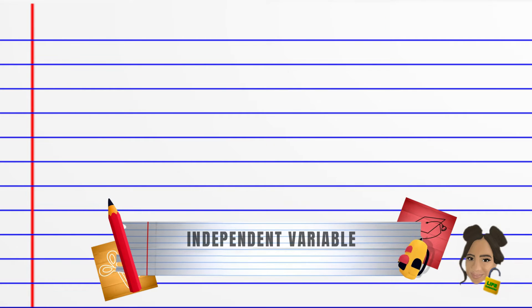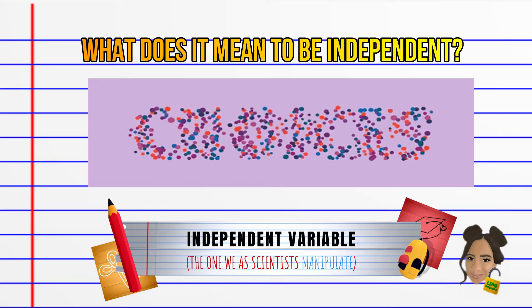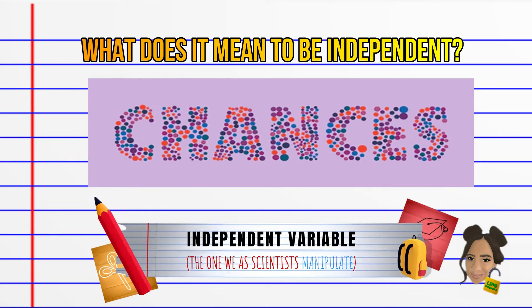The independent variable is the one that we as scientists manipulate. For the independent variable, we make choices and changes to affect changes.